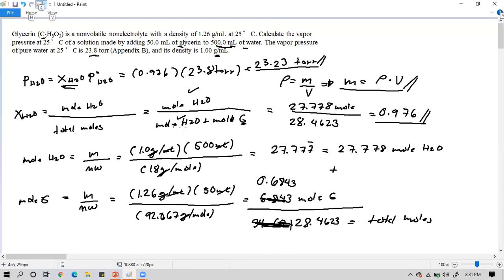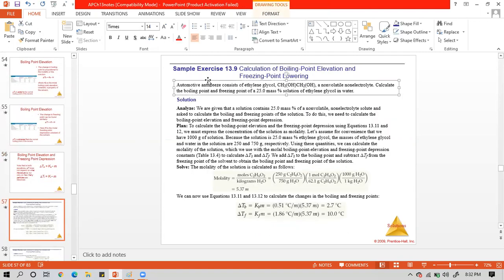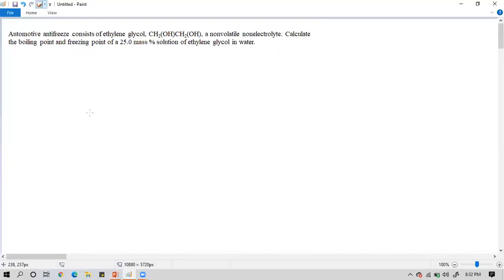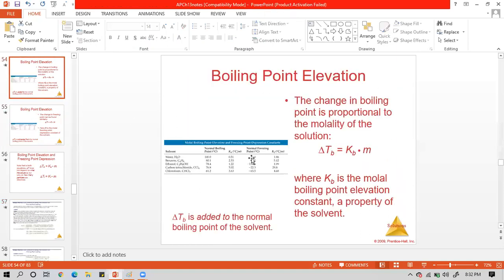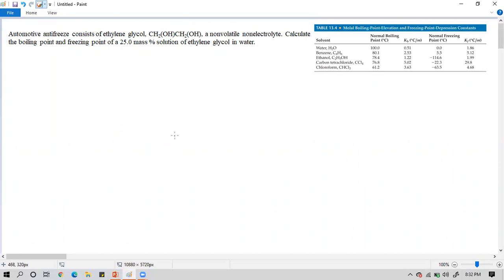Now let's proceed to our next problem. Our next problem is all about boiling point elevation and freezing point depression. Automotive antifreeze consists of ethylene glycol, a non-volatile, non-electrolyte. Calculate the boiling point and freezing point of a 25.0 mass percent solution of ethylene glycol in water. We have to consider the constant value of the water because we're looking at the solvent involved.